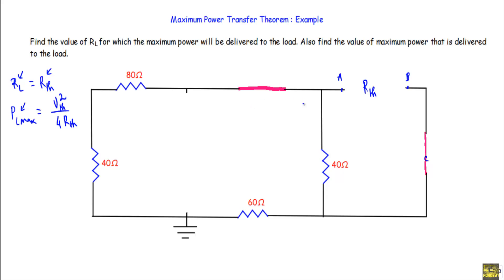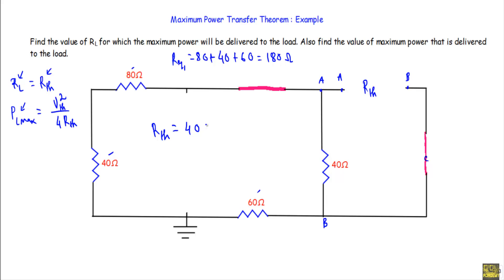After replacing the sources, I get a circuit like this. With respect to terminals A and B, we have 60 ohm, 40 ohm, and 80 ohm connected in series. Their equivalent series resistance will be equal to 80 plus 40 plus 60, which equals 180 ohm. This 180 ohm is in parallel with the 40 ohm resistor, so R_th equals 40 times 180 over 40 plus 180, giving R_th equal to 32.72 ohm.